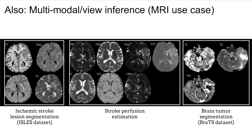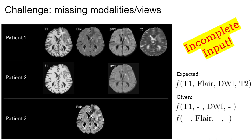Another multi-view use case in radiology is with MRI. Here, the different views are configurations of the image acquisition process, which yield different images and aspects of the brain. Unlike X-ray, there can be quite a lot of views for a single session. A challenge here is that you won't have all inputs all the time — requiring many views will limit the amount of data you can have and how easily a model can be deployed.